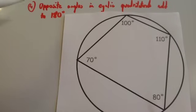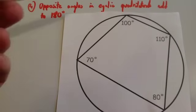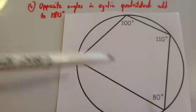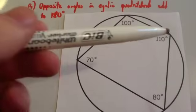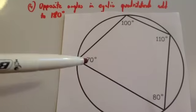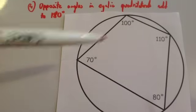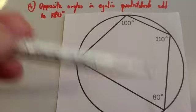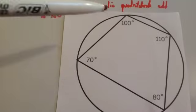The fourth circle theorem is that the opposite angles in cyclic quadrilaterals add to 180. So here's a cyclic quadrilateral with each vertex on the circumference of a circle. The opposite angles, notice here the 70 and the 110 and the 100 and the 80, the opposite angles add to 180 degrees.